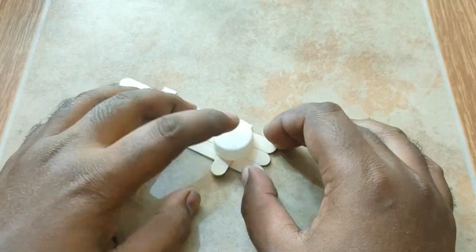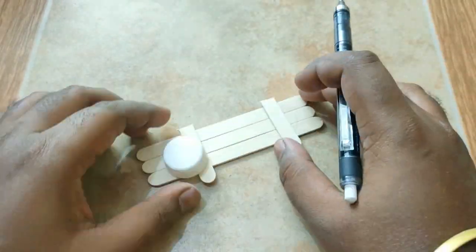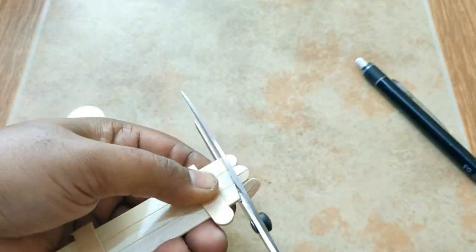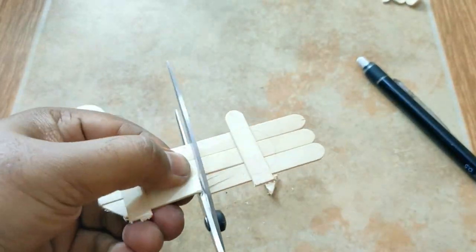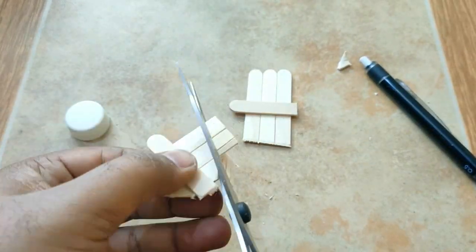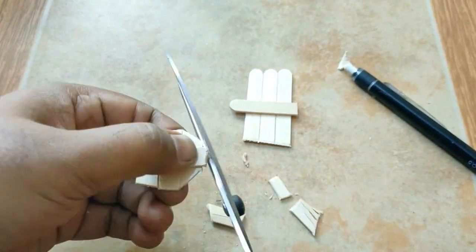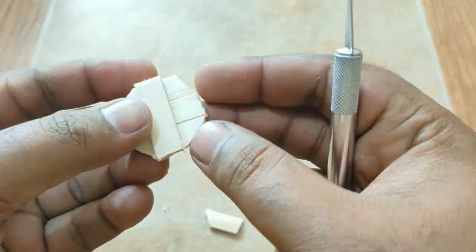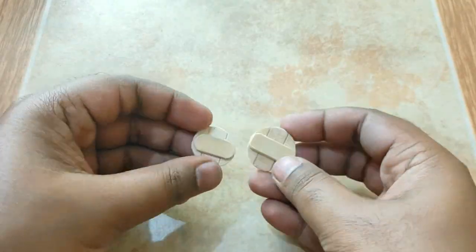Now back to the small board. I will cut out two small circles out of it, one is a little smaller than the other. Cutting these sticks with scissors or knife is a little difficult, so do it very carefully. After sanding it will look like this.